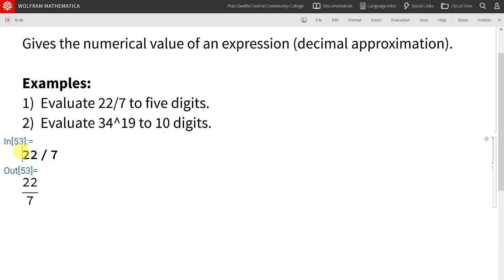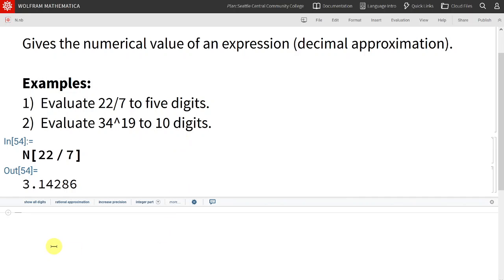So, what we're going to do is type N brace, end brace, and shift enter, and we see that Mathematica outputs 22 over 7 as a decimal, 3.14286.